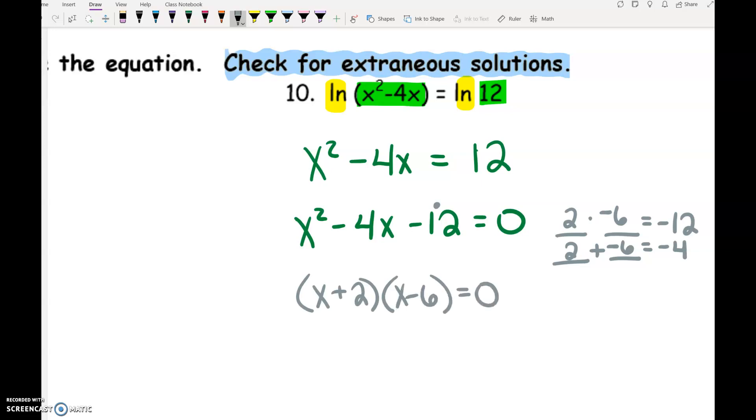So our factored form is x plus 2, x minus 6. You put those numbers exactly as they are in the factored form. Then to solve them, if x plus 2 had to equal 0, our solution would be negative 2. If x minus 6 has to equal 0, our solution is positive 6.